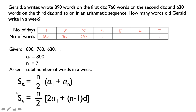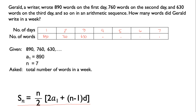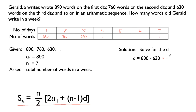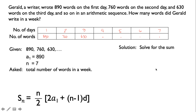We will use the second sum formula because we have all the given values and it is easier to find the common difference. In the first formula, we don't have the value of our last term A sub n. So let's solve first for the common difference d. D is equal to 760 minus 630, which is equivalent to negative 130. Now let us substitute all the values: n will be 7, A sub 1 will be 890, and d will be negative 130.